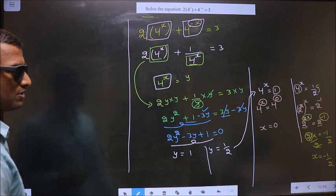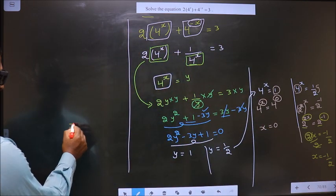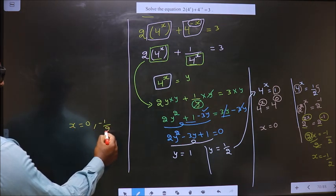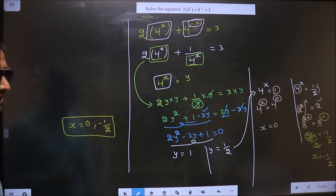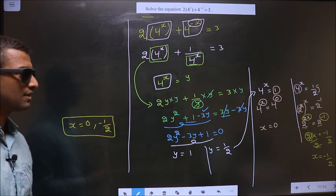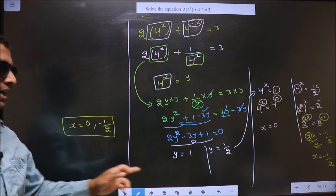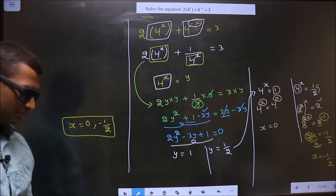So the values we got for x are 0 and minus 1/2. So this is our answer. Am I clear?